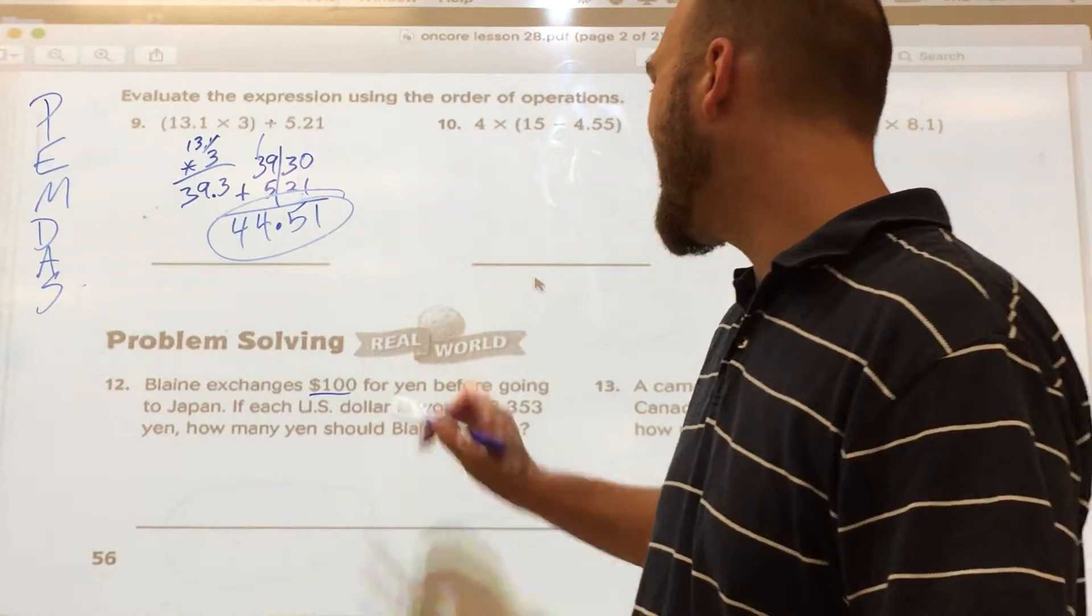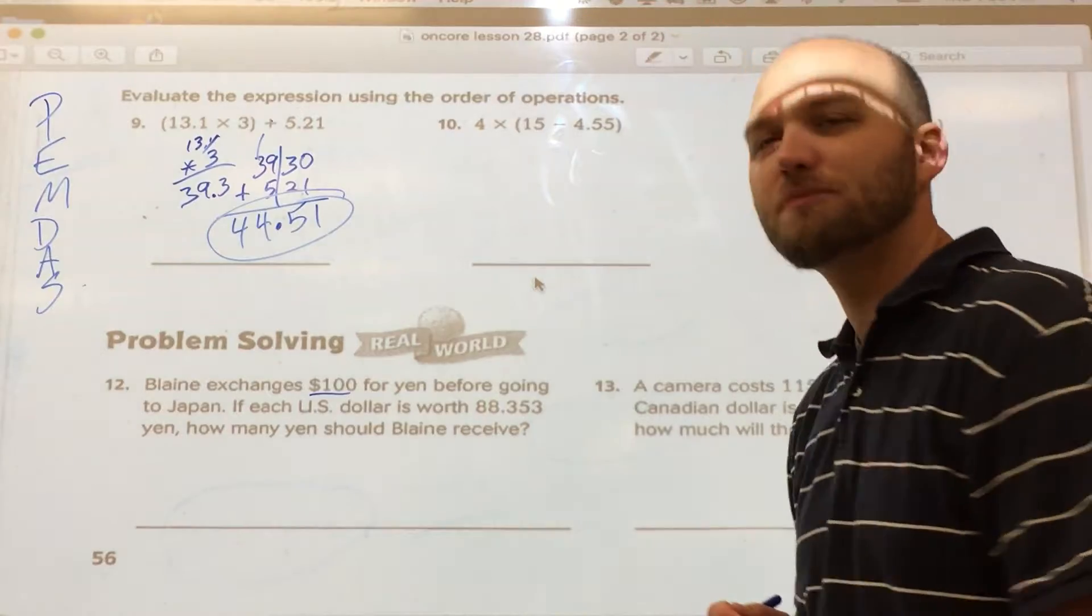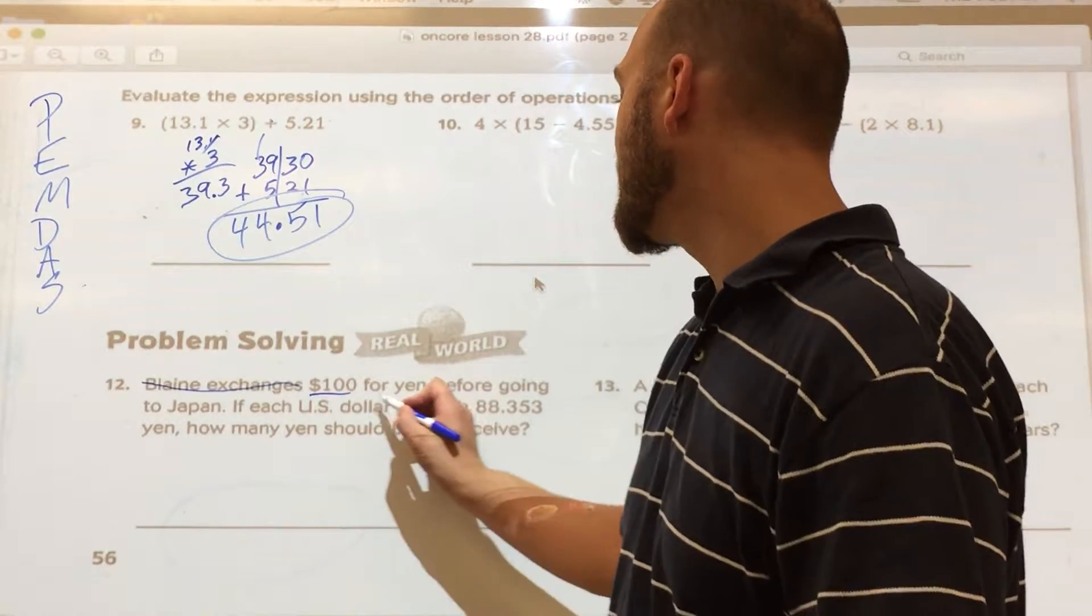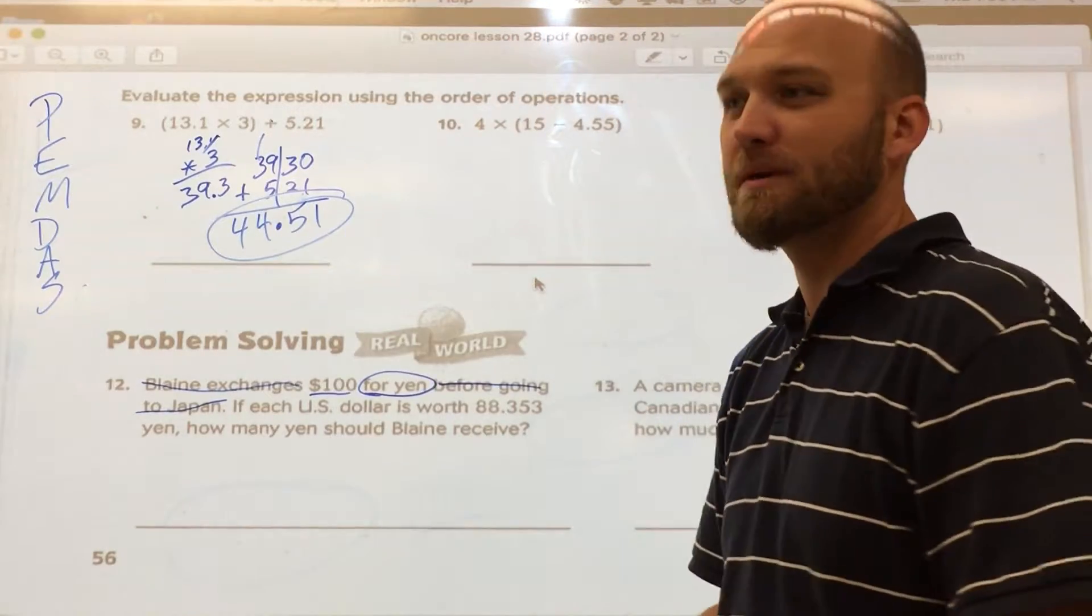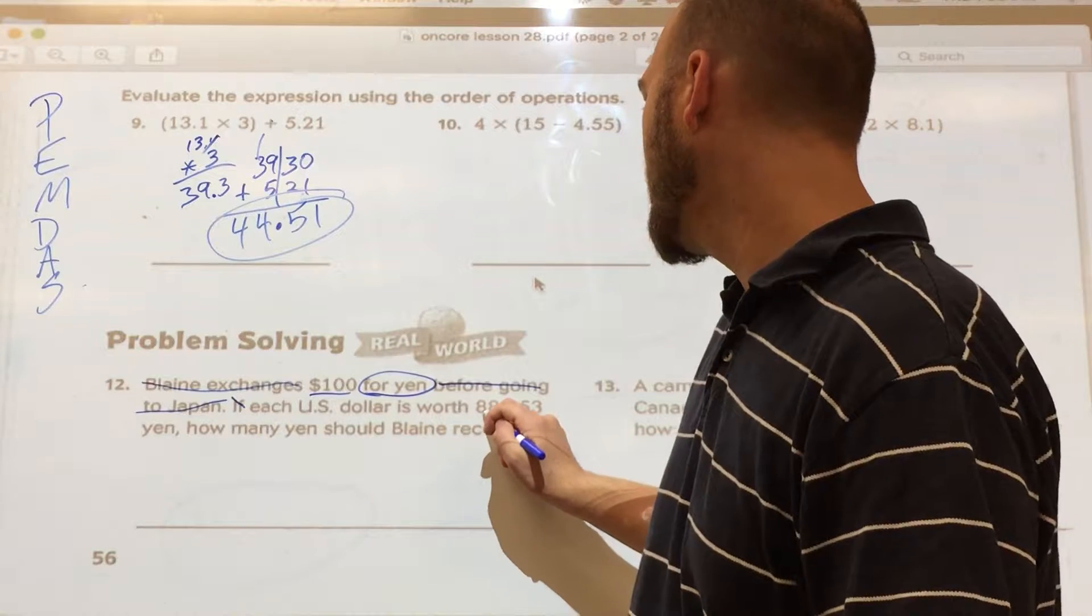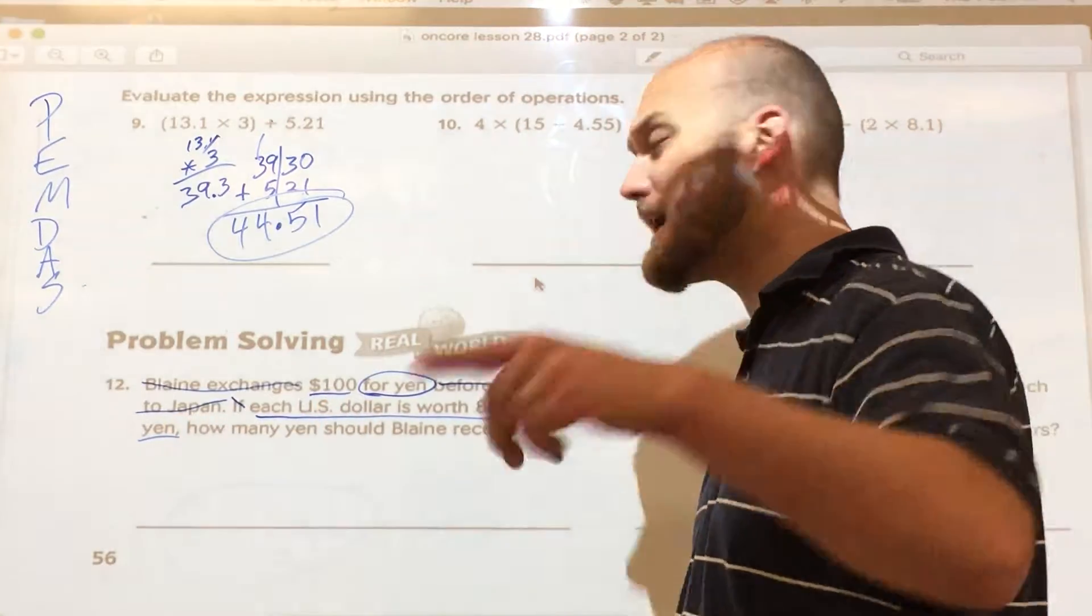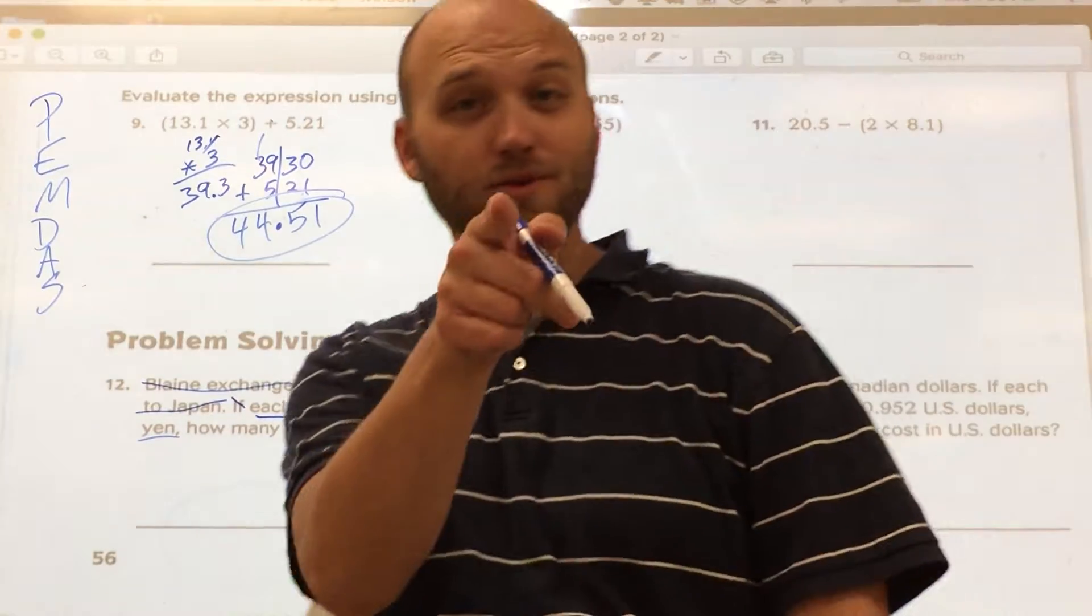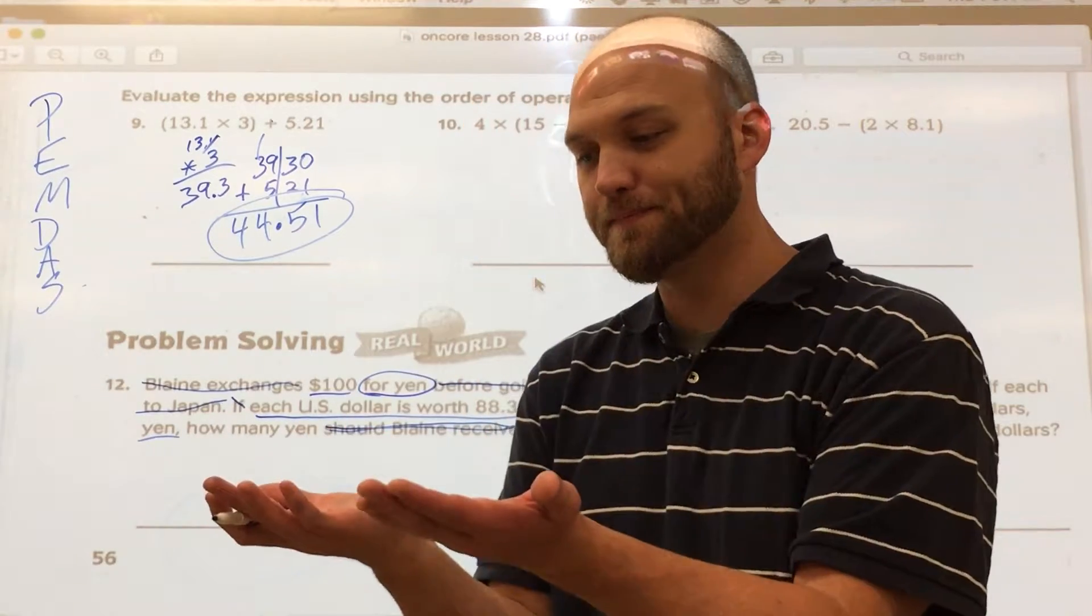Last thing I want to go over with you real quick here. Blaine exchanges $100 for yen before going to Japan. If each U.S. dollar is worth 88.353 yen, how many yen should Blaine receive? Well, let's make sense of this problem, really. Blaine, I'm sure, is a very nice person, but we don't really need to know that he's here. $100 exchanged for yen. It really doesn't matter to me if he does it before going to Japan, after Japan, at the airport, at McDonald's for some weird reason he wants to pay with yen. It doesn't matter to me. I have $100 for yen. Each U.S. dollar is worth 88.353 yen. That's important. And I want each because I know that $1 is worth that. How many yen does that make? It really doesn't matter if Mr. W is doing this, if you're doing this, if Mom's doing this, if Blaine's doing this. I'm sure he's a nice person, but we don't really care. We've broken a problem down into, I'm at the airport, I have $100, and I need yen.